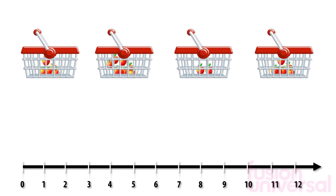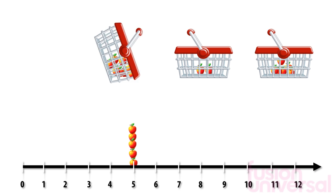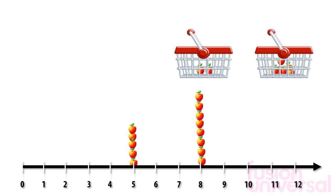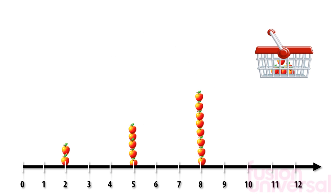The first basket contains 5 apples. We have piled them up at the correct place on the number line. Now let's look at the second basket — this time there are 8 apples. Now the third basket. This basket only contained 2 apples.